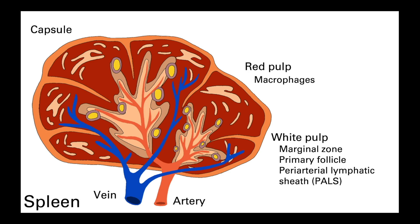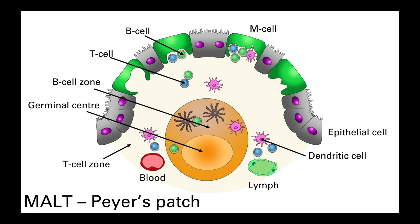The white pulp is interspersed within the red pulp and has a similar structure to lymph nodes, with B cell follicles and T cell zones. In the spleen, the T cell zones surround the arterioles in a region called the periarteriolar lymphoid sheath, or PALS. Sitting outside these sheaths are the B cell follicles, surrounded by the marginal zone. The marginal zone is important because this is where splenic macrophages and dendritic cells are able to filter out circulating antigens and blood-borne pathogens.